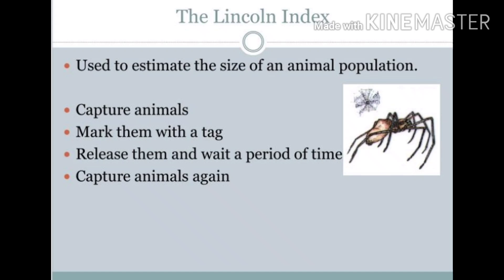It's very difficult to count each and every animal present in a particular area to estimate population size. In the Lincoln index method, we first capture the particular animal whose population density we want to know, mark them with a tag, release them, and wait for a particular period of time. Then we recapture these animals again, and by applying a suitable formula, we calculate the approximate population density.